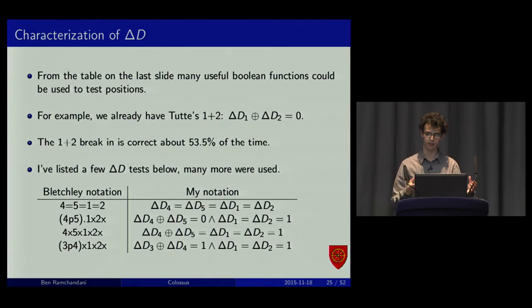We can think of lots of different things we can do from that table. Lots of different Boolean functions we might be able to work out that would give us a deviation from half the time being true. If you look at dots 1, 2 break-in, it turns out about 53% of the time the first two characters, first two bits, sorry, are the same. I've listed a few more here. Don't worry too much, just these can be implemented on Colossus. So, this is kind of why it could work.